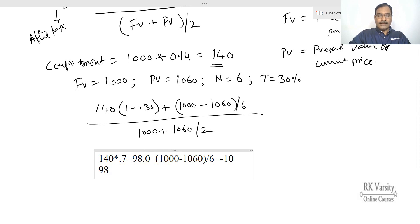98 plus minus 10—so your numerator is 88—and this is 1000 plus 1060 upon 2, which is 1030. So 88 upon 1030 gives 0.0854 or 8.54 percent.